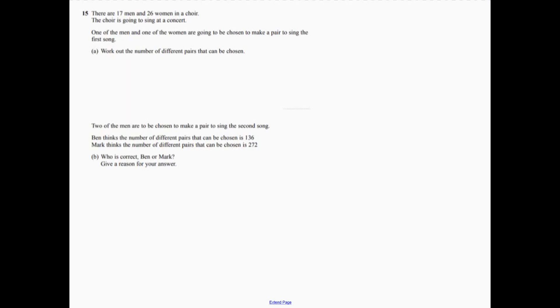Question 15. So I need to pick a man and a woman. This is just product rule when we're looking for the number of ways that we can pick them. And all it is, is 17 times 26. So there are 442 ways.